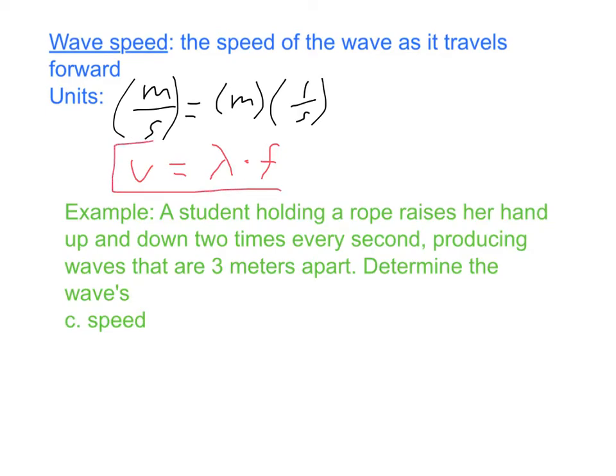This is what we call the wave speed equation, used for any wave to calculate any one of those three variables as long as you know the other two. For part c, determine the wave speed. The speed equals wavelength times frequency. The wavelength is three meters, the frequency is two Hertz, so the speed must be six meters per second. A Hertz is one over second, so meters times one over second gives meters per second.